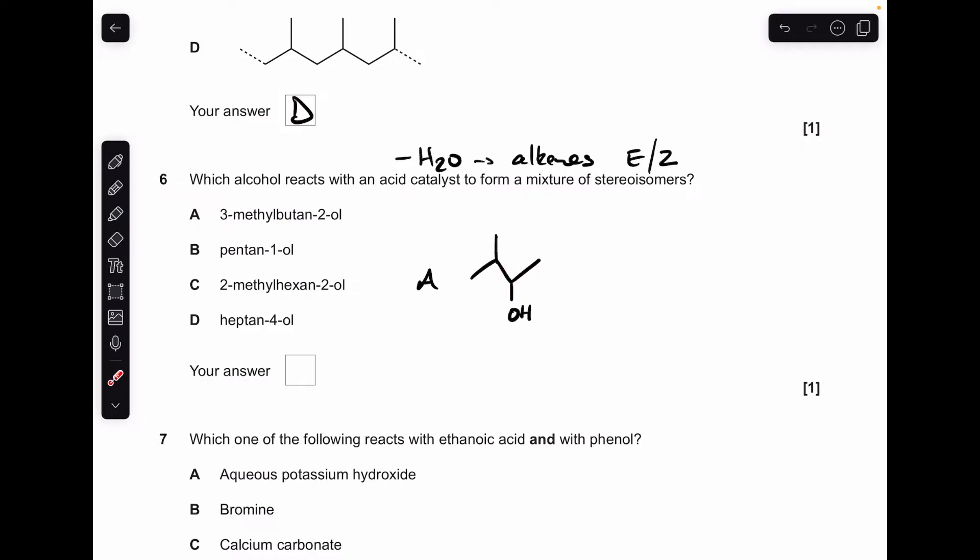3-methylbutane-2-ol looks like this. The OH is going to come off, and then hydrogen from an adjacent carbon atom. So we're going to get these two alkenes here. Neither of these can show EZ, because on this carbon here, we've got two identical methyl groups. And on this carbon here of the double bond, we've got two identical hydrogens. So A is not right.